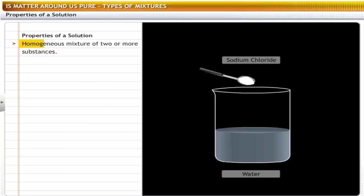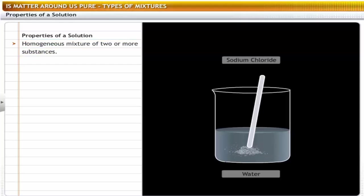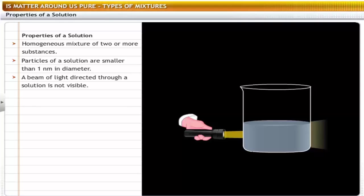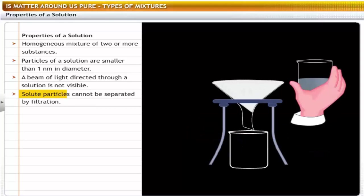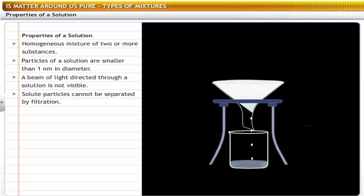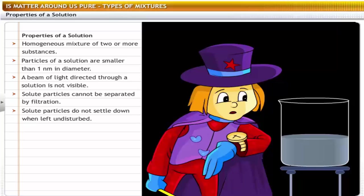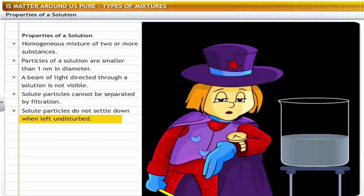A solution is a homogeneous mixture of two or more substances. The particles of a solution are smaller than one nanometer in diameter, so they cannot be seen with the naked eye. When you direct a beam of light through the solution, it is not visible, since the particles do not scatter a beam of light. The solute particles cannot be separated from the mixture by filtration since they pass through filter paper. When a solution is stable, the solute particles do not settle down at the bottom of the container even if you leave the solution undisturbed.